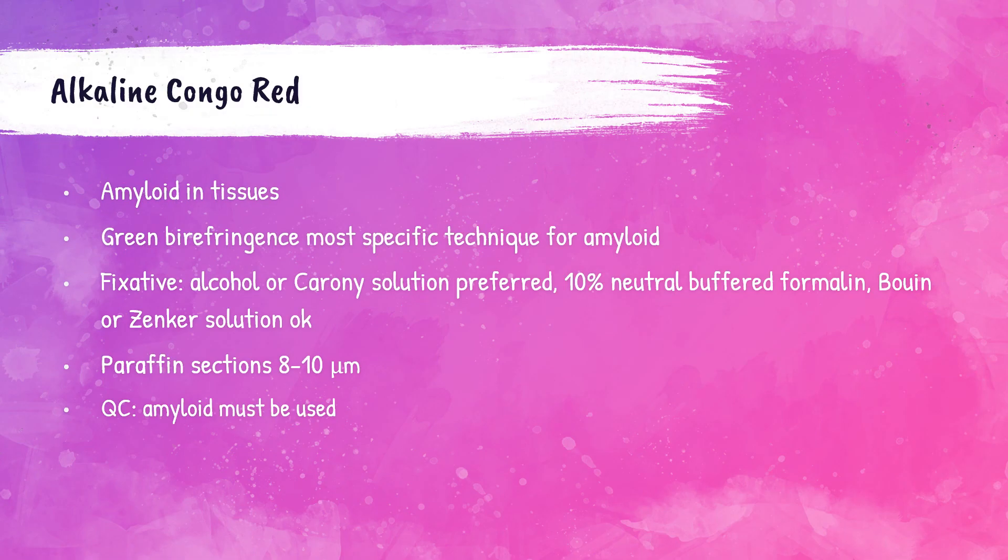The first amyloid stain is the alkaline Congo red method. After staining, visible green birefringence is the most specific indicator for the detection of amyloid. Preferred fixatives are alcohol or Carnoy solution, Bouin solution, Zenker solution, or 10% neutral buffered formalin. It is important to note that if the tissue is stored for a prolonged period in 10% neutral buffered formalin, the stain will have a decreased intensity.